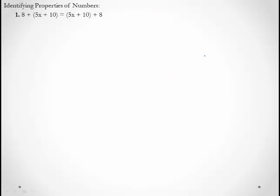The next step is to be able to identify properties when we see them. This one is a little confusing sometimes because it has parentheses in it — when we see parentheses we want to think grouping. But look at what moved. Did the parentheses move and the numbers stayed in the same order, or did the numbers change order? Here: 8 + 5x + 10 = 5x + 10 + 8. These switched positions — that gives us the commutative property.